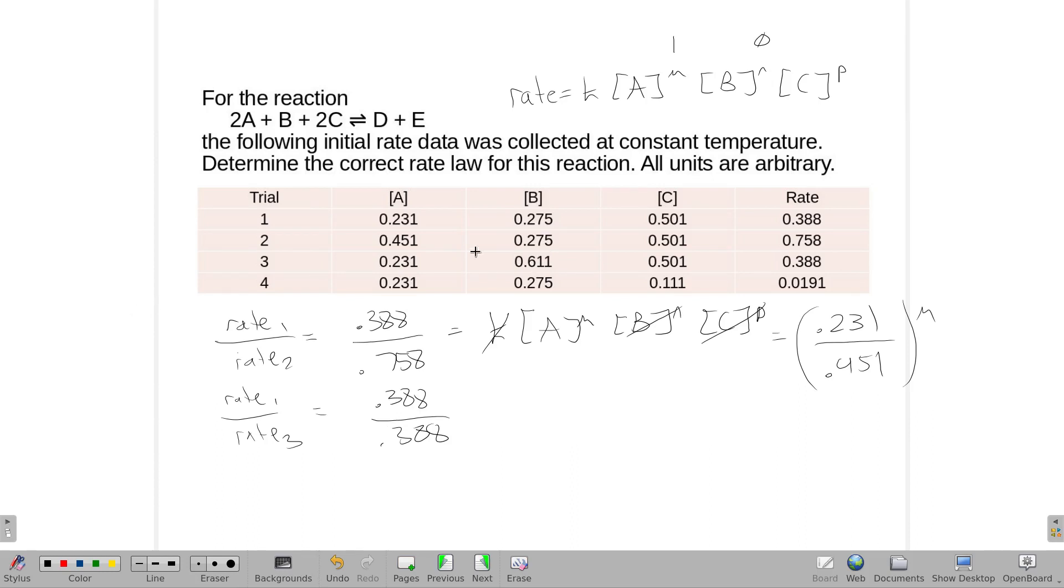And then the last one, I want where C changes, so I'm definitely using 4, but I want where A and B don't change. So it looks like rate 1 and rate 4. 1 is 0.23, oh wait, that's not my rate. My rate is 0.388, and the rate for 4 is 0.0191.